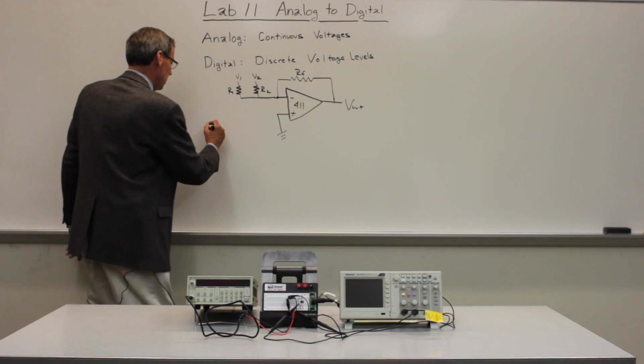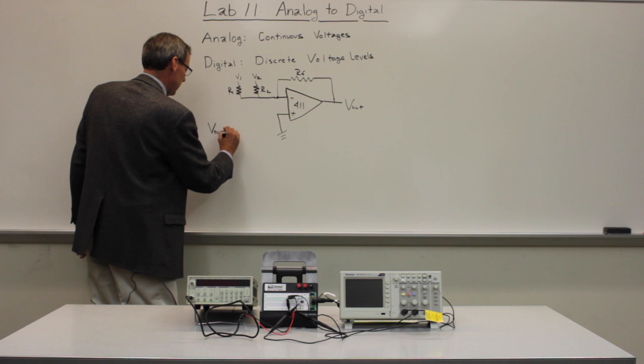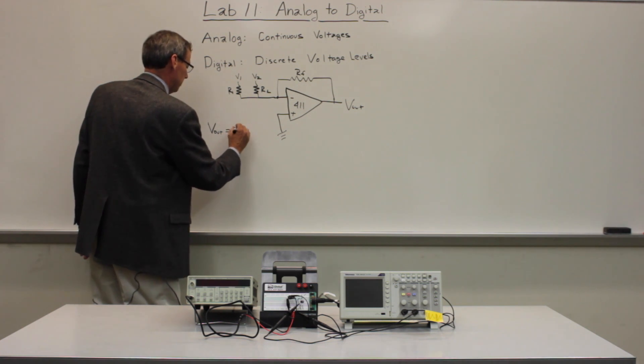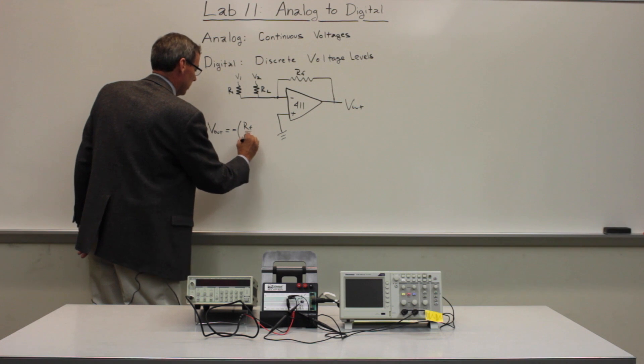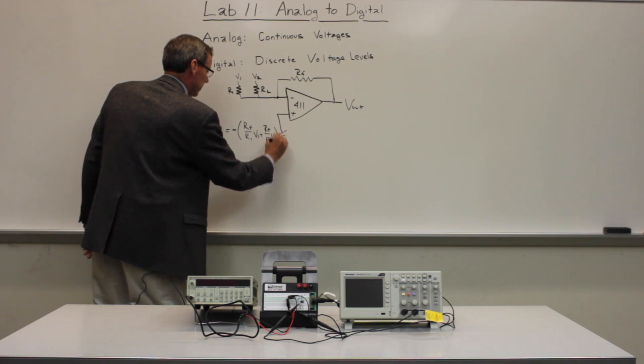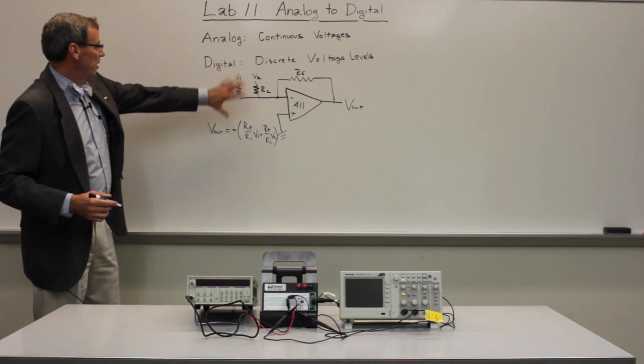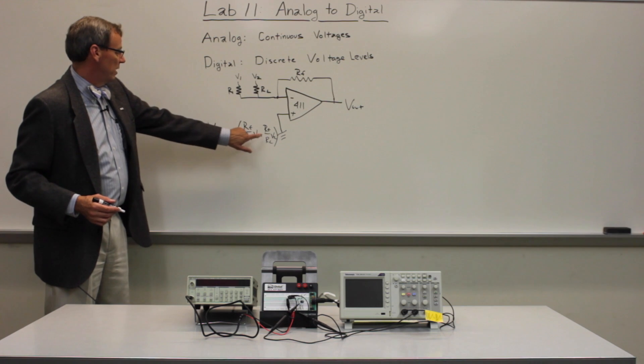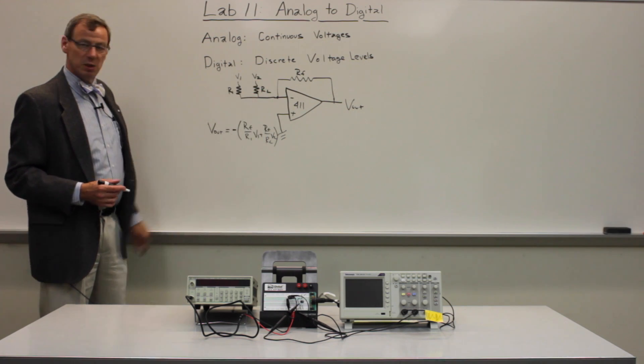This is known as an adder circuit because the output voltage is essentially the sum of the two inputs. It's minus RF over R1 V1 plus RF over R2 V2. And if we set all the resistors to the same, then these will just become one, and it would be the negative sum of those two inputs.